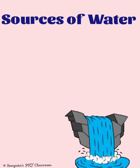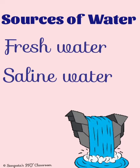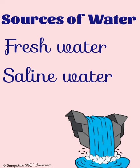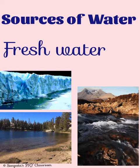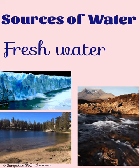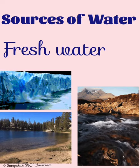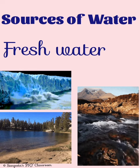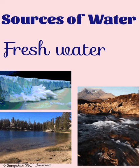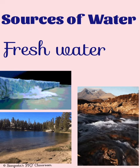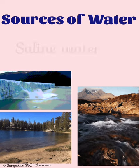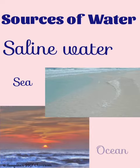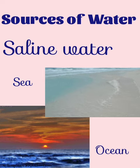Water found on earth can be broadly classified into two types: fresh water and saline water. Fresh water is the drinkable water found in ice caps, glaciers, lakes, rivers, streams, ponds and below the surface of earth. Whereas saline water is the salty water found in seas and oceans.